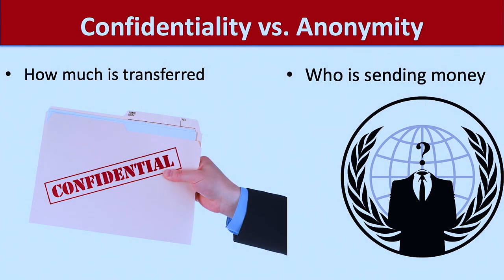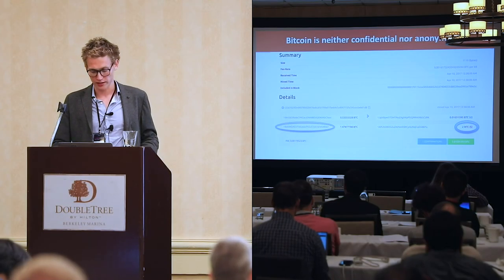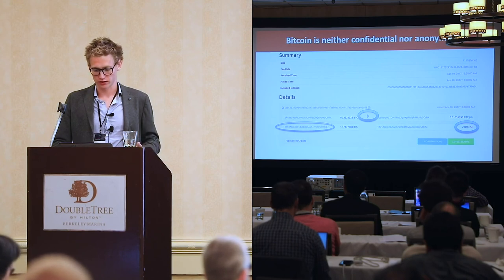In terms of terminology, I'll use the words confidentiality and anonymity. Confidentiality refers to the amount being transferred, while anonymity is more about who is transferring to whom. It turns out that Bitcoin is neither confidential nor anonymous — even though there is some pseudonymity, you can exactly see the amounts and who is sending to whom.